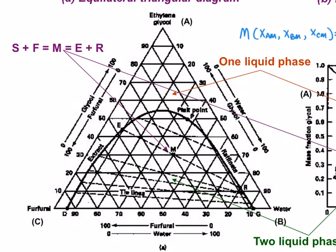Alright, so this is how you read the coordinate for M. You are given three axes.